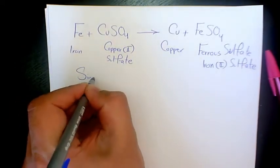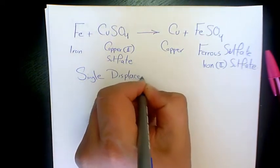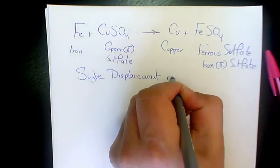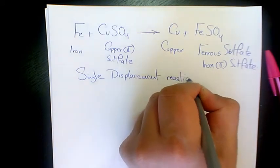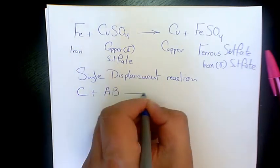Here we are dealing with single displacement reaction, those kind of reactions that have like C plus AB and then it gives you AC plus B. This is called single displacement reaction.